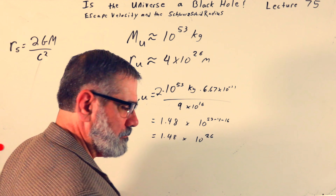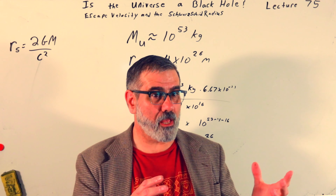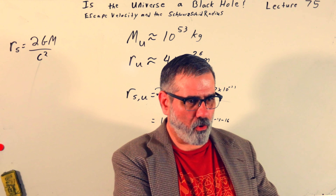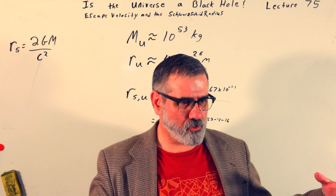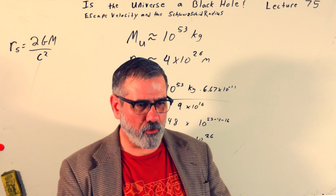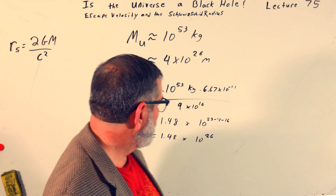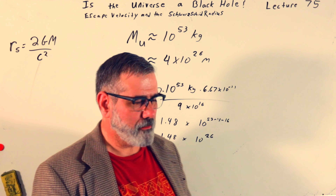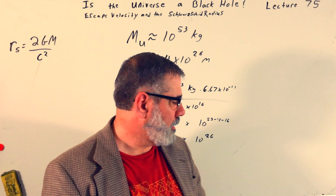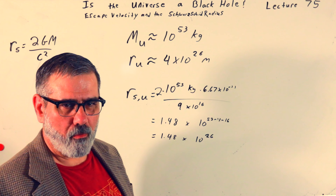Is the universe a black hole? I don't know. It would be interesting if it was — in the past the universe was much smaller with the same mass, so it would certainly have been a black hole then. Maybe the universe begins as a black hole and after 10–14 billion years gets close to the end of its black-hole era, and then you could actually escape and go into a larger cosmos of other universes. It's interesting that the radius of the observable universe is so close to its Schwarzschild radius.